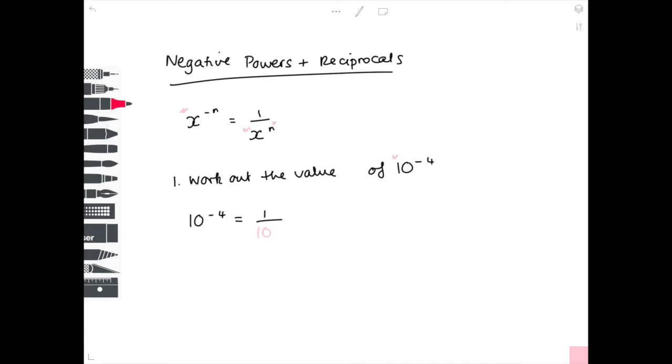What is n? Well it's the small number up here but made positive, so I'm just going to write that as 4 here. And then 10 to the 4 just means 10 multiplied by itself 4 times, giving us the value of 1 over 10,000.